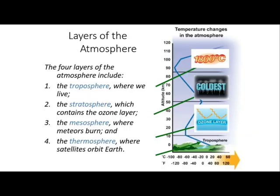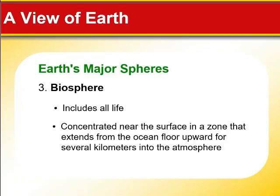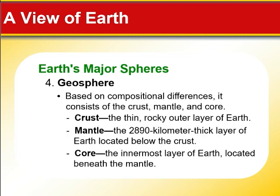The next part of Earth's sphere is the biosphere. This part of the Earth's major sphere includes all life forms. Usually, it's at the surface in a zone that extends from the ocean floor upward for several kilometers into the atmosphere. And finally, we have the last sphere — the geosphere.